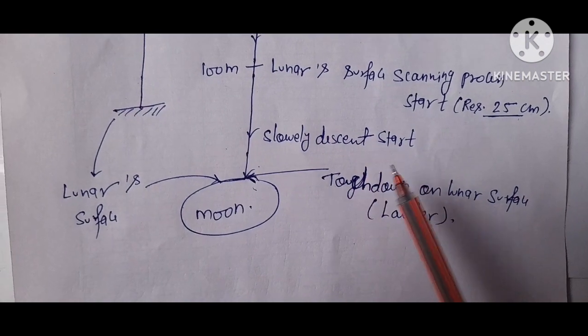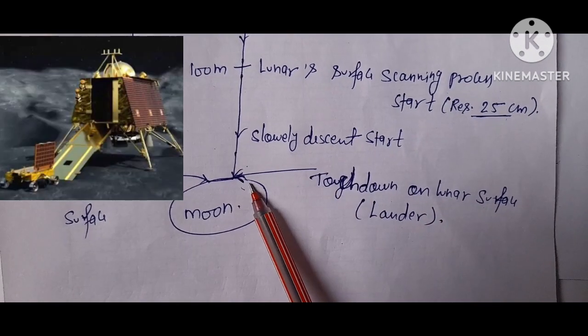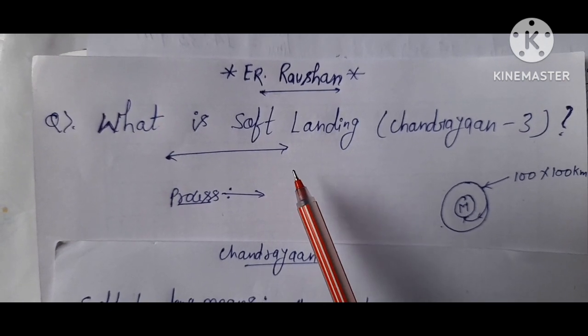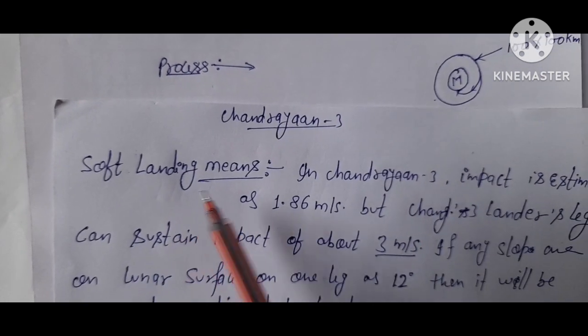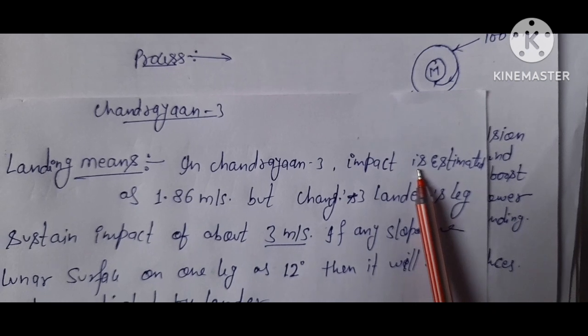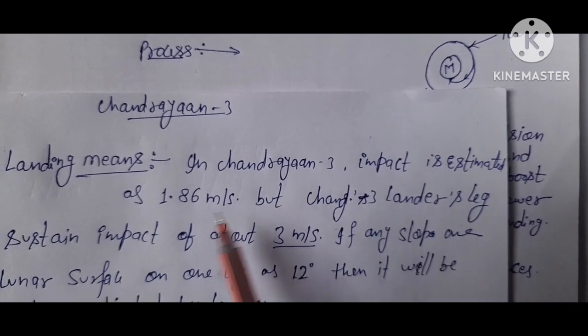Finally, it slows down and touches down on the lunar surface. The basic meaning of soft landing regarding Chandrayaan-3 is that the lander's legs' estimated impact velocity will be...